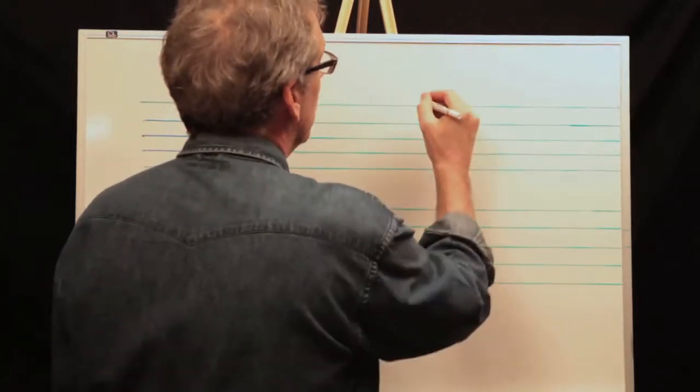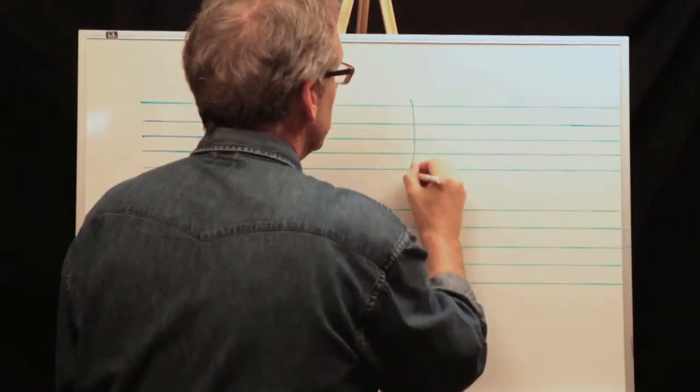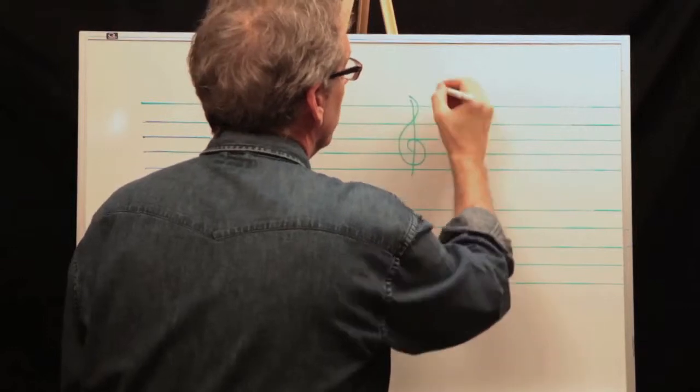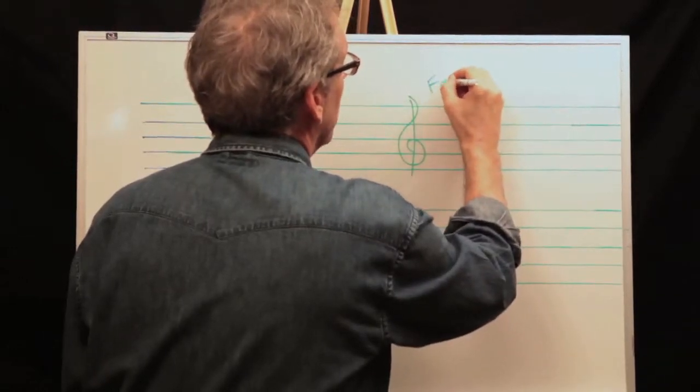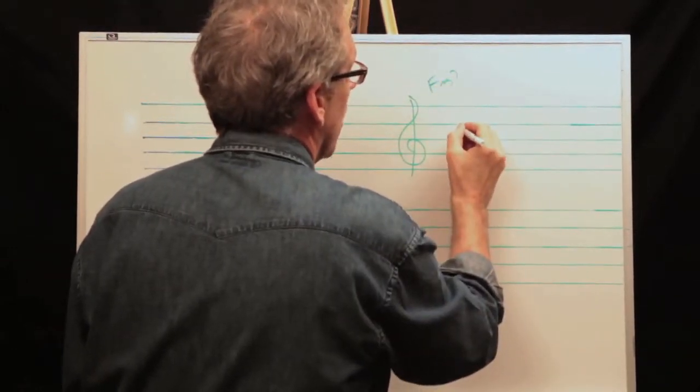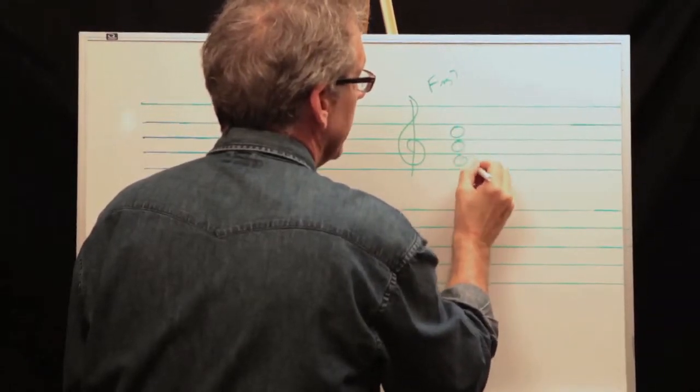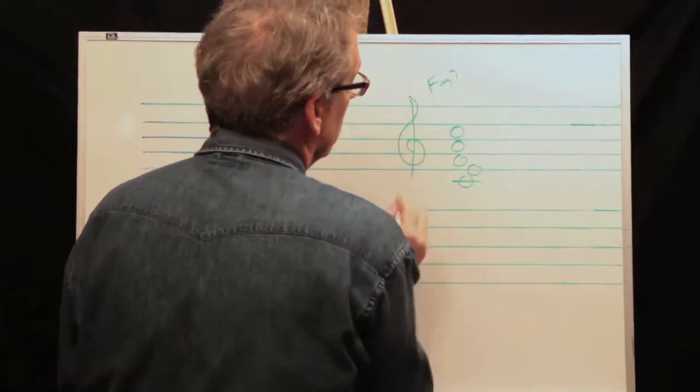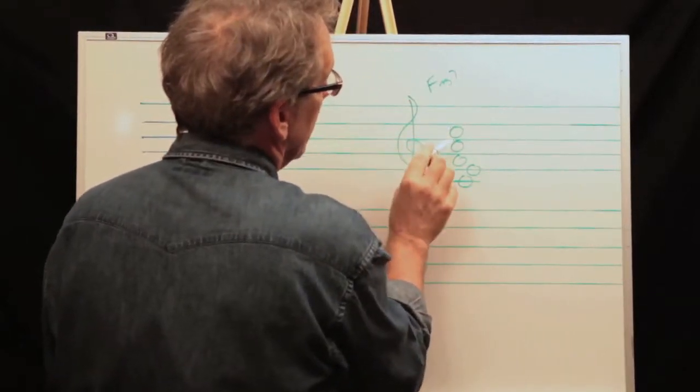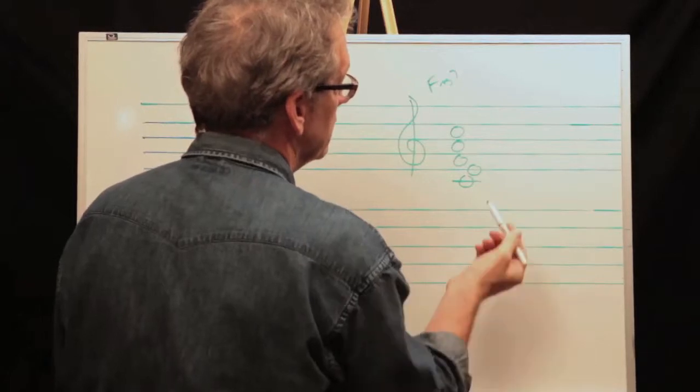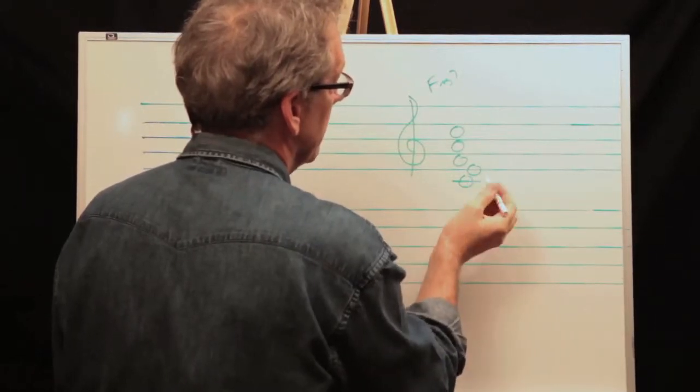So on our diminished passing chord, if we were in the key of F, I believe that we were, and our melody note was C, we just went right down and did a block. C is the fifth, A is the third, F is the root, E is the seventh, major seventh, and C is the fifth again.